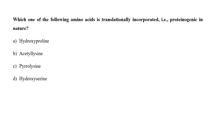Which one of the following amino acids is translationally incorporated, i.e. proteogenic in nature? A. Hydroxyproline, B. Acetyllysine, C. Pyrrolysine, or D. Hydroxyserine? Proteogenic amino acids are amino acids incorporated biosynthetically into proteins during translation. Throughout known life, there are 22 genetically encoded proteogenic amino acids: 20 in the standard genetic code, and additionally selenocysteine and pyrrolysine incorporated by special translation mechanisms. So the correct answer is option C, pyrrolysine.